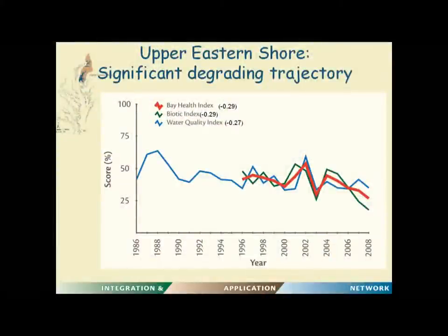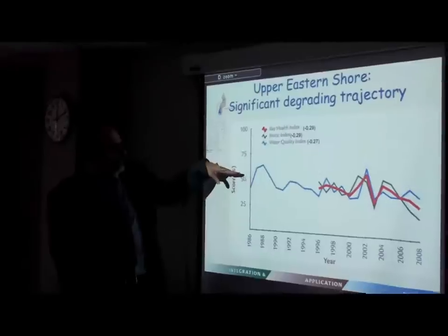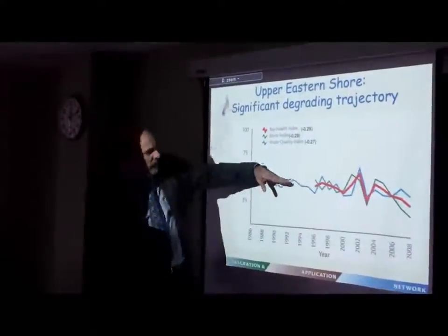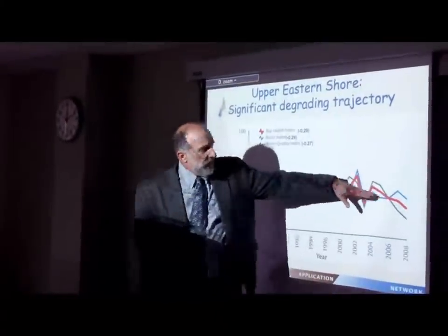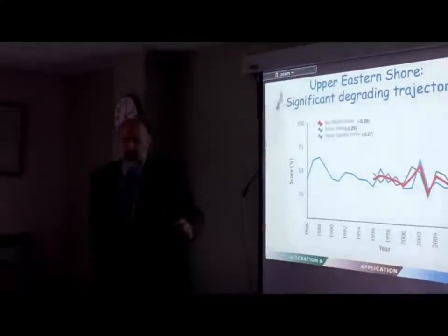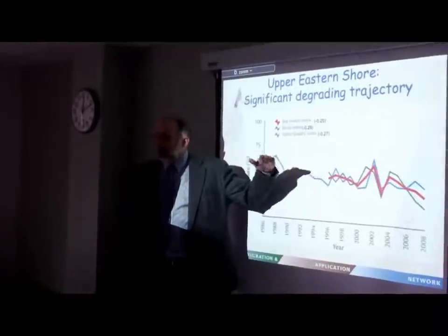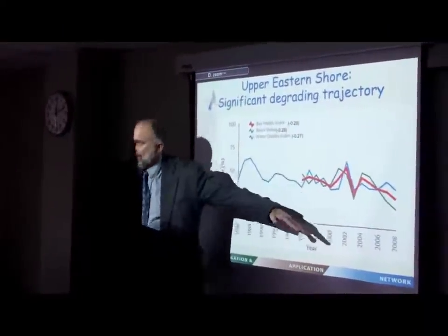Let me drill into two examples, starting with the Upper Eastern Shore — which had a significantly negative Bay Health Index, R-squared of minus 0.29. Breaking that down: the Biotic Index was also 0.29, and the Water Quality Index was 0.27. You can see the water quality data in blue stretches back further than the biotic health, because some of these programs were only initiated around 1996. But you can see an overall negative trajectory from the water quality, and then continuing with the Bay Health Index. Not only was this grade of 27 one of the lowest in the Bay, but it's getting lower — low and getting lower.